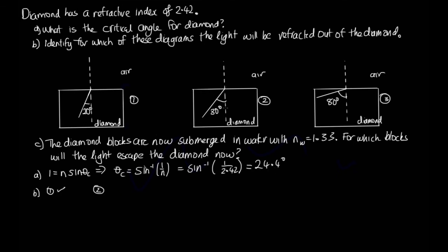For two, the angle is 30 degrees, and that's bigger than 24.4 degrees. So it is going to be totally internally reflected. So no, it will not leave it. And for three, again, 80 degrees is bigger than 24.4. So it's not going to be able to leave the diamond in this case.